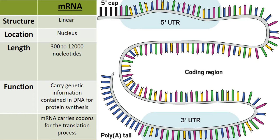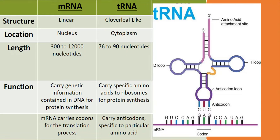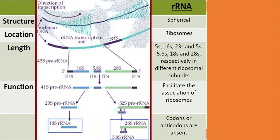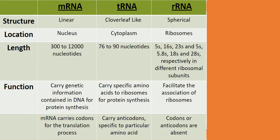The structure of mRNA is very simple — it is linear. The structure of tRNA is cloverleaf-like, as you can see in the image. The next one is rRNA, and its structure is spherical, which is a little more complex than the other two.